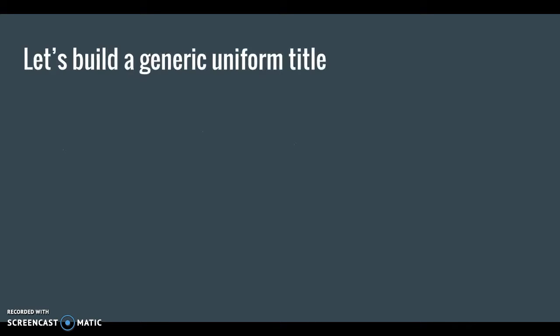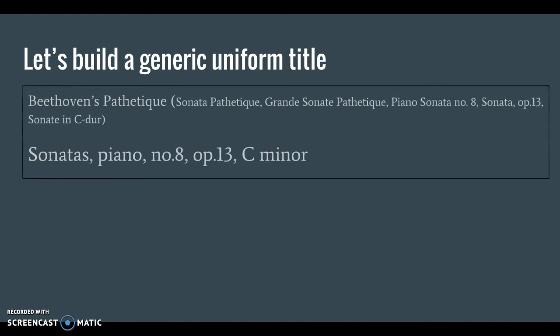Let's look at the construction of a generic uniform title. In general, the uniform title will begin with a genre or form, which will be plural if the composer wrote more than one work in that particular form. Unless the form implies a specific performance medium, like a symphony or a song, the form name will be followed by the performance medium. After that, the opus or dedicated catalog number may follow, and often the key.